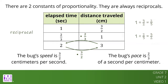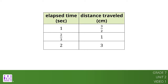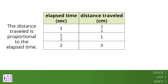So how do we know which constant of proportionality to talk about? In general, when we represent a proportional relationship with a table, we say the quantity in the second column is proportional to the quantity in the first column. And the corresponding constant of proportionality is the number that we multiply the values in the first column by to get the values in the second column.